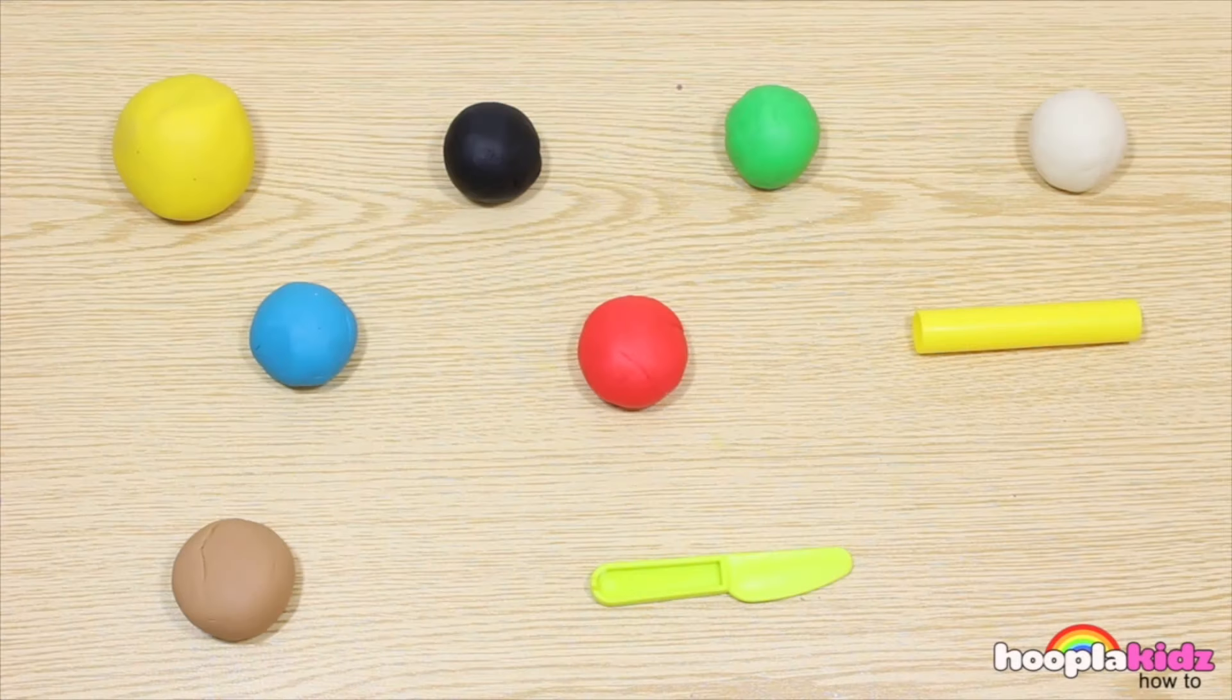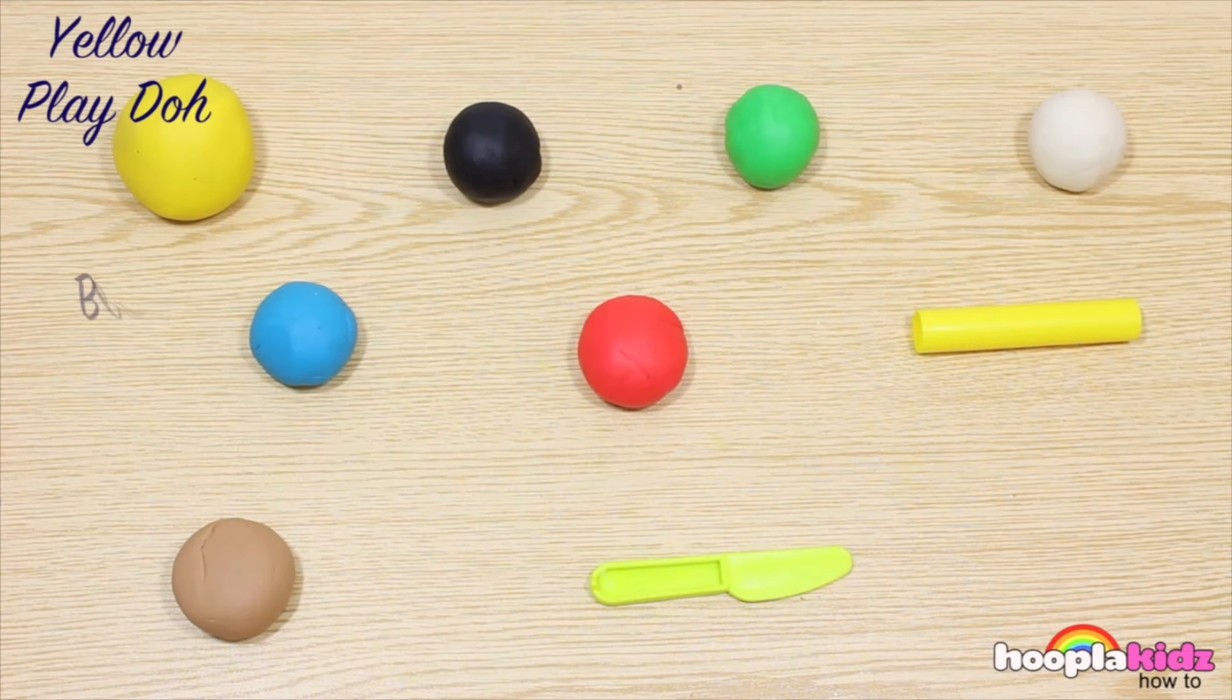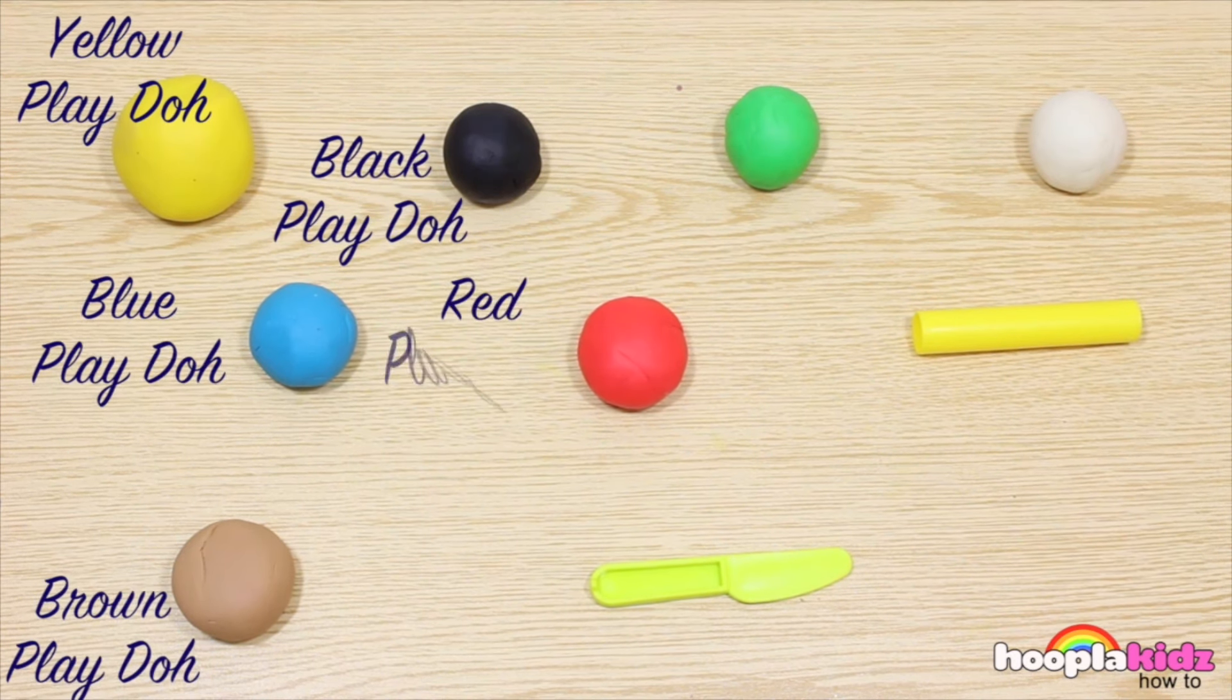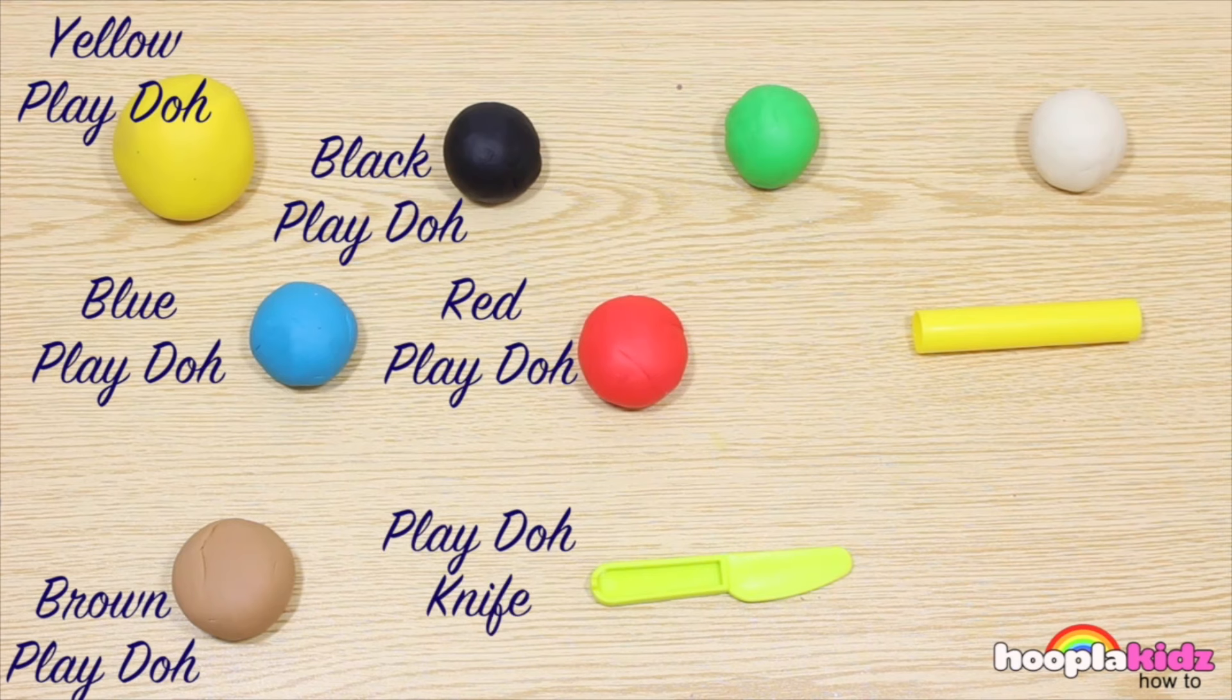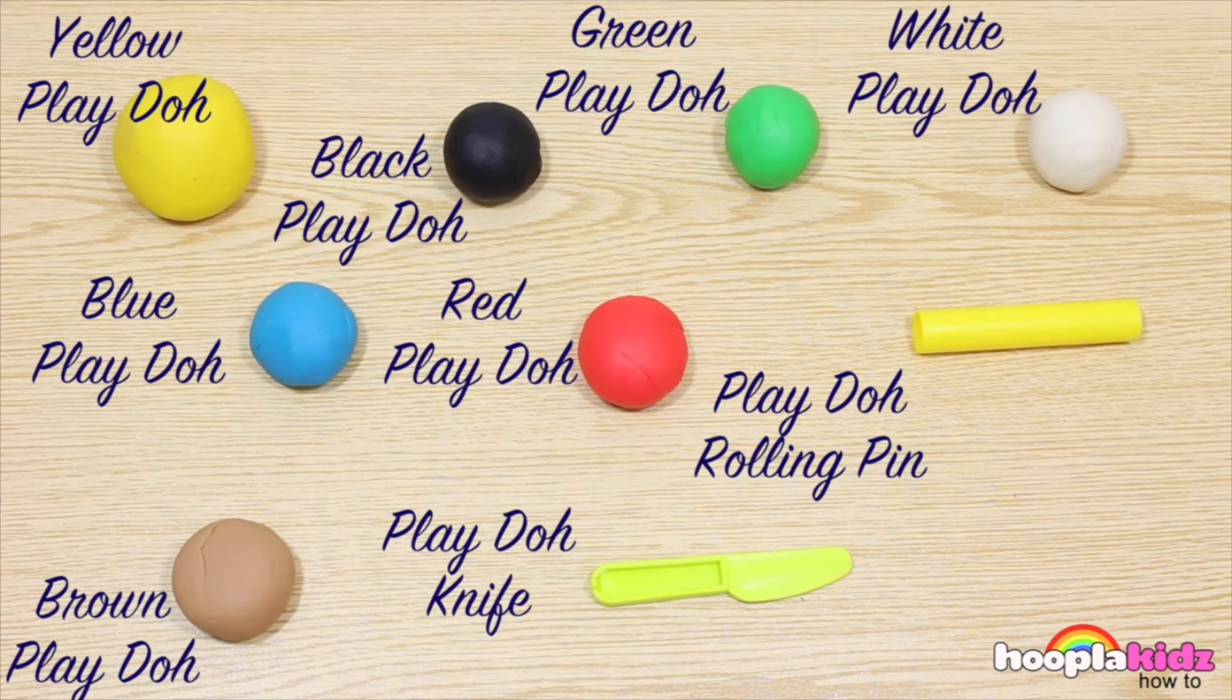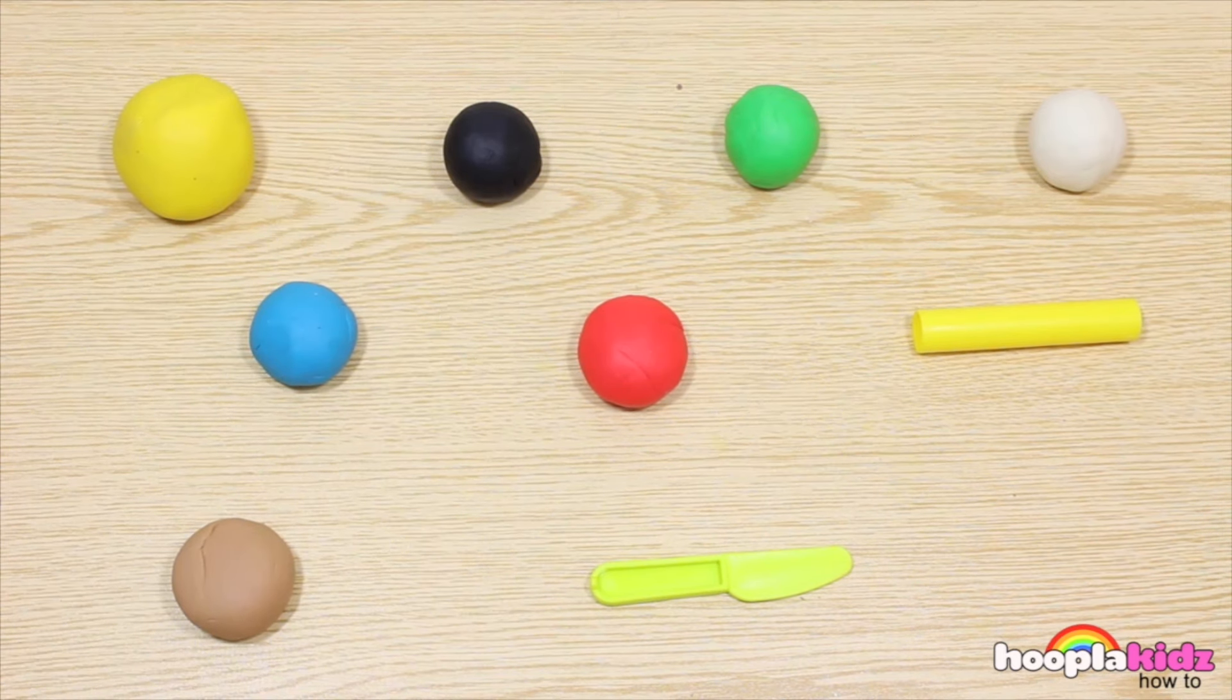All you're going to need for this is yellow Play-Doh, blue Play-Doh, brown Play-Doh, black Play-Doh, red Play-Doh, a Play-Doh knife, some green Play-Doh, a Play-Doh rolling pin, and finally some white Play-Doh. So let's get started.